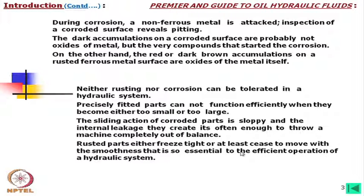Rusted parts either freeze tight or at least seize to move with the smoothness essential to efficient operation of a hydraulic system. Due to rust, a leakage path may be closed, but if there is a moving path, rust will prevent the motion. Furthermore, rust particles mixed with the oil deteriorate its quality both physically and chemically.